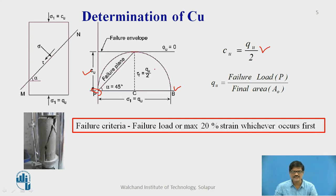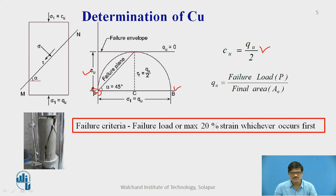From the Mohr's circle, we can clearly derive the equation for cohesion as half of unconfined compressive strength. This sigma1 is also called unconfined compressive strength, qu. This qu is determined as the ratio of failure load to the final area. When you perform the test, a typical failure crack is observed. A cylindrical sample is subjected to failure and usually the failure plane is at 45 degrees, because the inclination of the failure plane is 45 plus phi by 2, and since phi is 0 in this case, the failure plane has an inclination of 45 degrees with the major principal plane, as proven through this Mohr's circle.